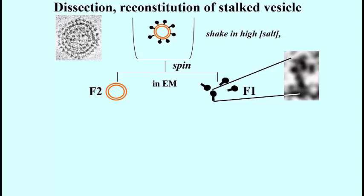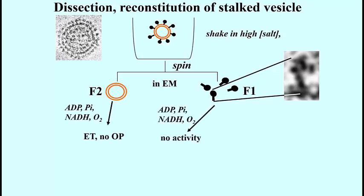Fraction 2, F2, the smooth vesicle in the pellet, would conduct electron transport, but could not make ATP. Fraction 1, the isolated stalked particle, would not do electron transport, and of course would not do ATP synthesis. But if ATP were added to this fraction 1, the ATP would be hydrolyzed, leading Racker and company to call this fraction 1 an ATPase.